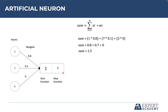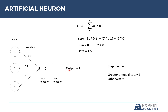Now we need to apply the step function, which is the simplest operation. If the number is greater than or equal to 1, the result is 1; otherwise, the result is 0. Since 1.5 is greater than 1, the output of the perceptron is equal to 1.